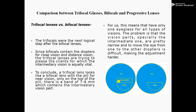This means having only one eyeglass for all types of vision — distance, near, and intermediate. The problem is that the vision zones, especially the intermediate one at only 7 to 8 mm, are too narrow to move the eye comfortably from one diopter to another. Moving from one diopter to the other is difficult, making adjustment harder. It is very difficult to adjust because the intermediate portion is very narrow.